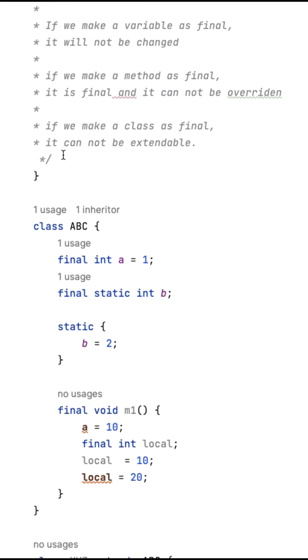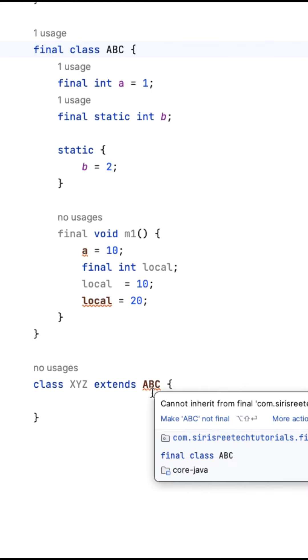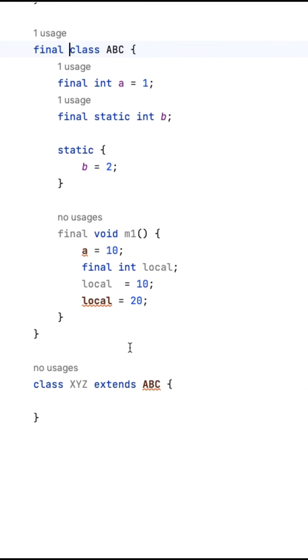If we make any class as final, it cannot be extendable. Previously it was not giving any error, but now it is giving an error because ABC is final. Only if it is not final can it be extendable.